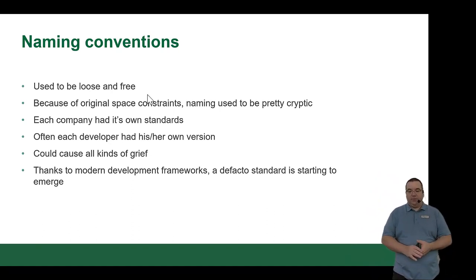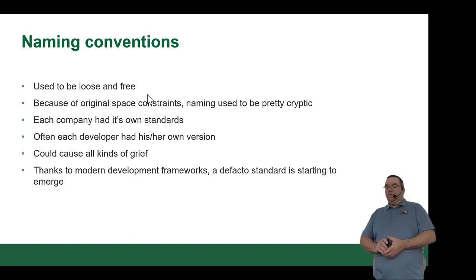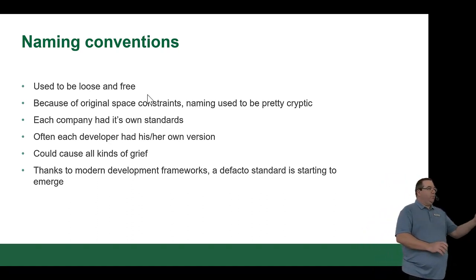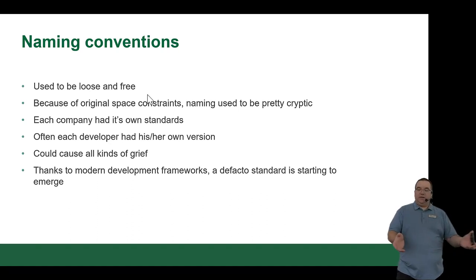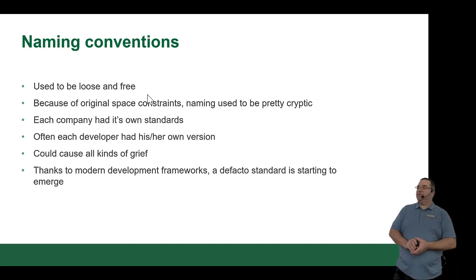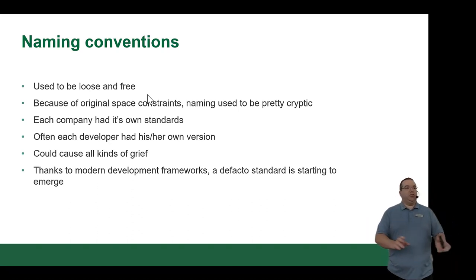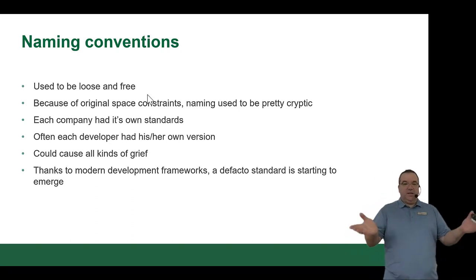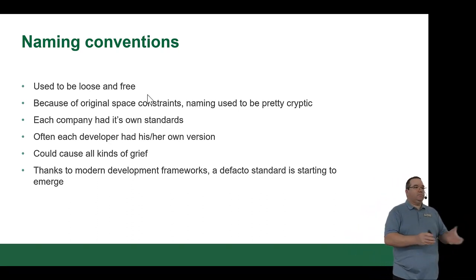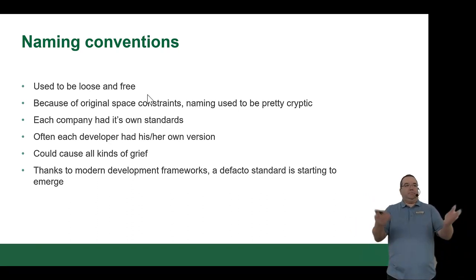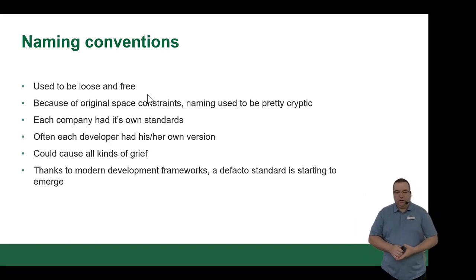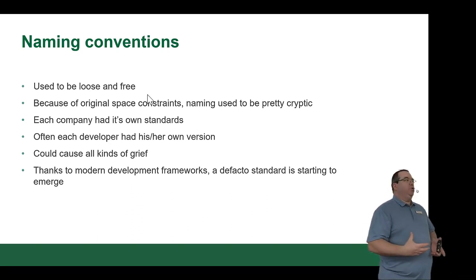Each company had its own standard, and often each developer inside a company had their own standard. When I first started working in Ottawa, I inherited an old system written by three different people, and every table created by a different person looked different — complete garbage. Thanks to modern development frameworks, a de facto standard is starting to emerge. A de facto standard is basically one that no official standards body like ISO or ANSI has formally approved, but many companies have adopted it.